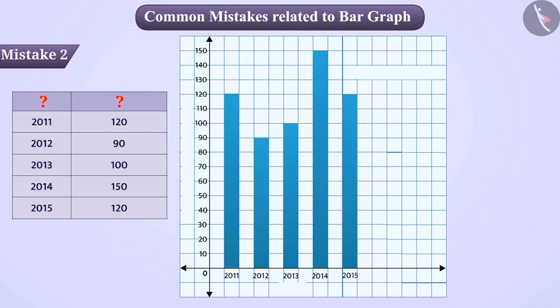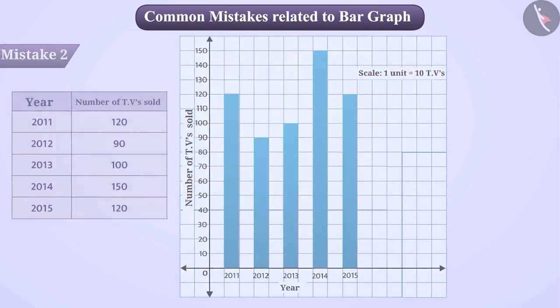Therefore, it is necessary to show the scale on the bar graph as well as the proper names of what is being taken on the horizontal and vertical lines.